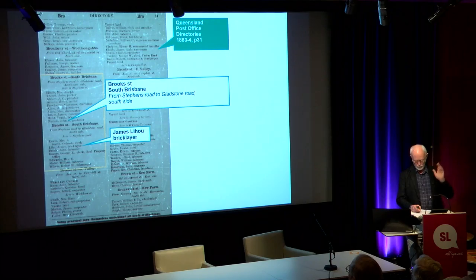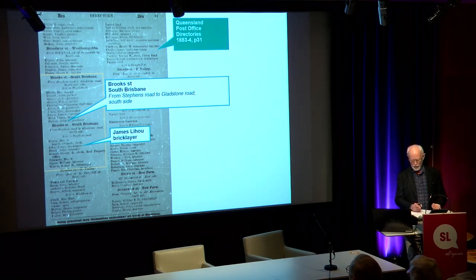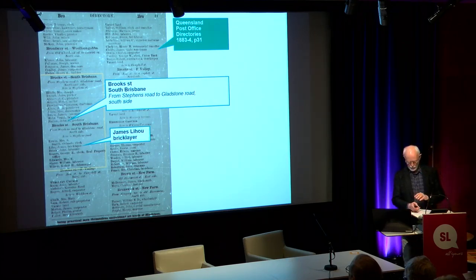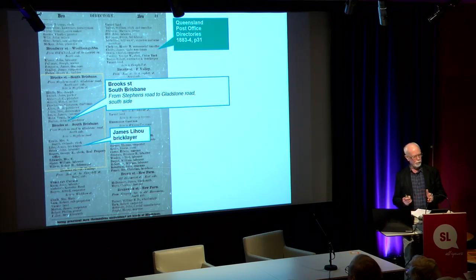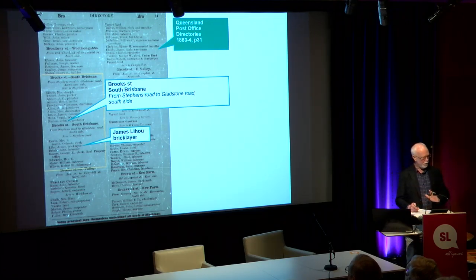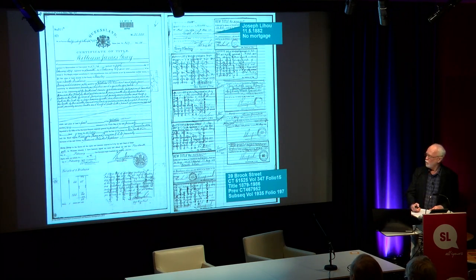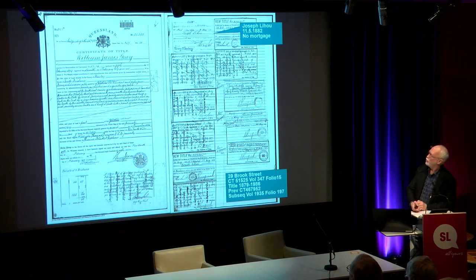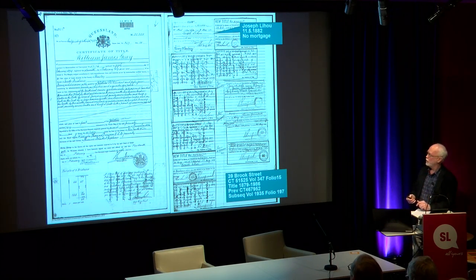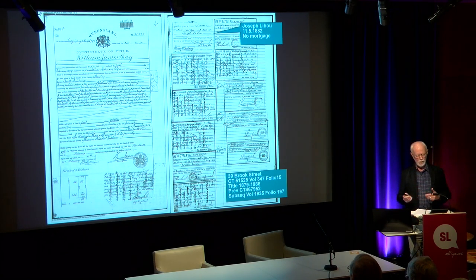A friend at the Friar Library at the University of Queensland in 1974 introduced me to the post office directories, which at that stage I'd never heard of. She sent me an illustration of this page — the directory from 1883 for Brook Street, South Brisbane — which lists the residents in sequence from Stevens Road to Gladstone Road. In about the position of our house, there's an entry for James Leo, Bricklayer. That seemed a possibility. Jumping back two titles to the one before — you can see that a Joseph Leo acquired the property in 1882, just a year or so ahead of those directories. So it looked like reasonably convincing evidence that he may have been the builder.